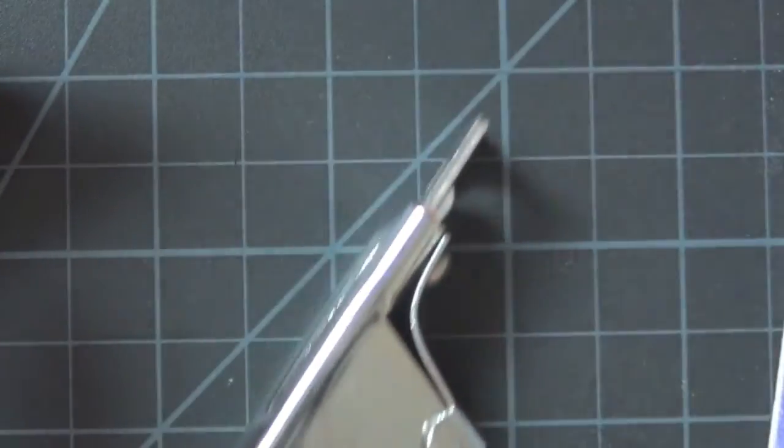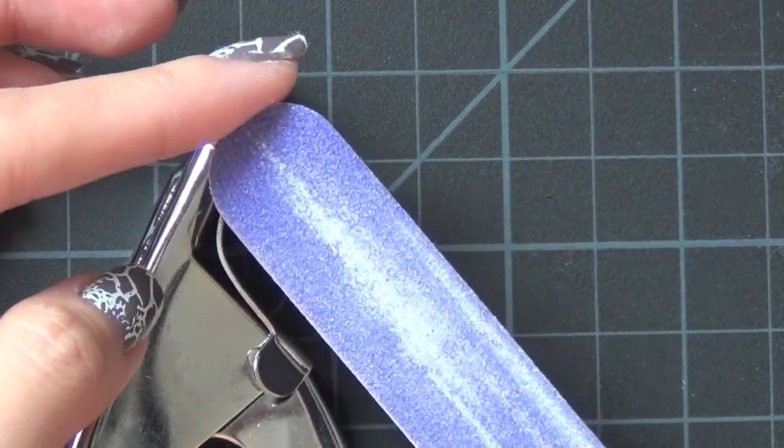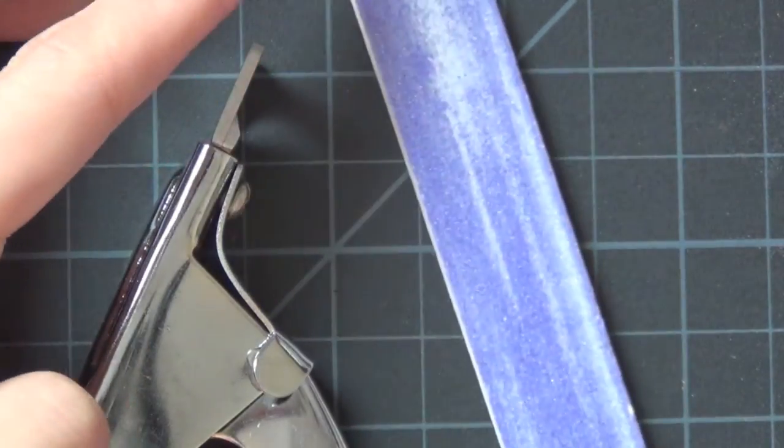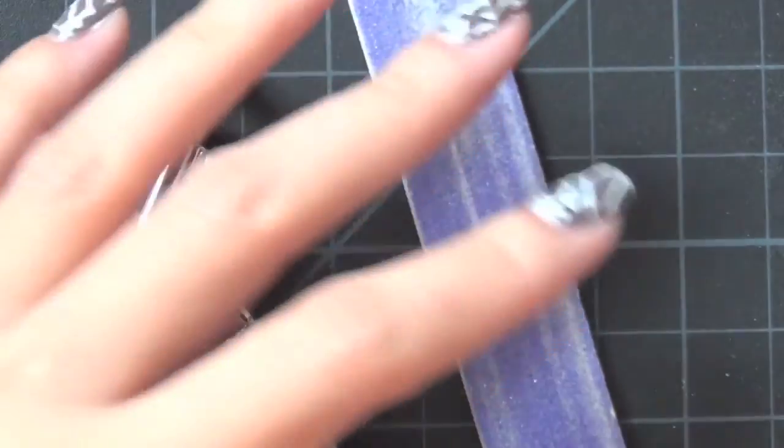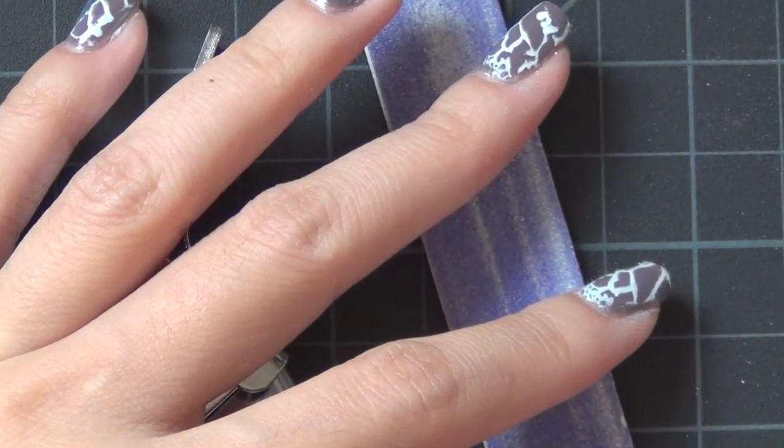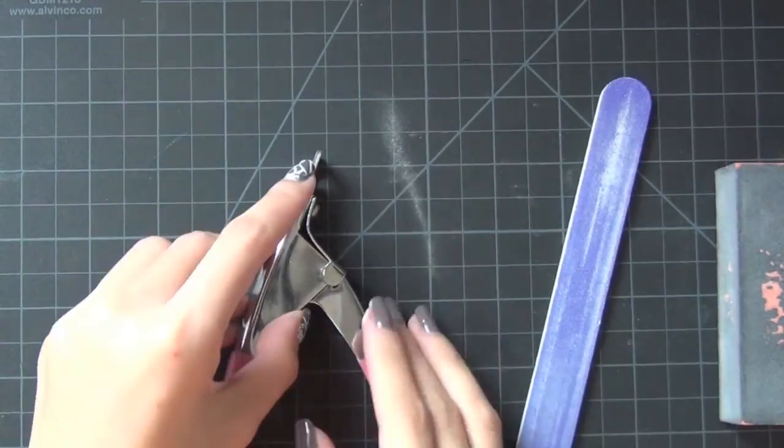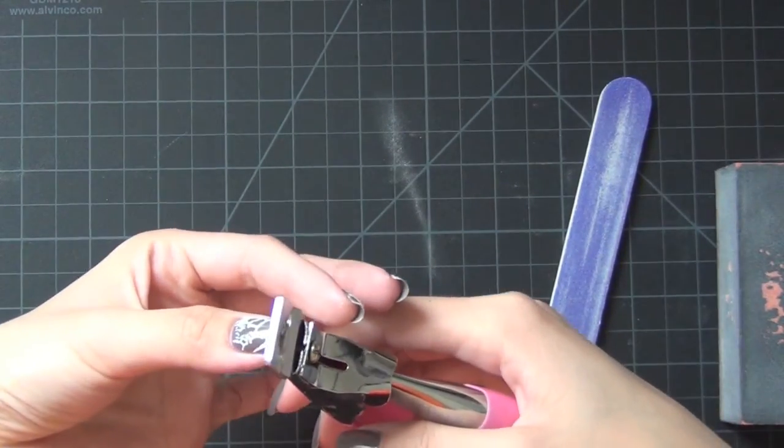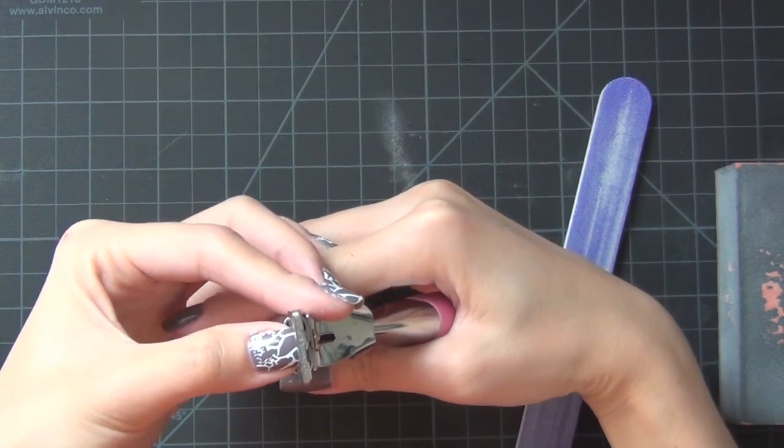I also use a paper nail filer, a softer one, not the grainy one, this is very soft, and some buffers. These are the things that you can find in the drug stores near you. Maybe not the clipper, but try to watch this video until the end and maybe you can win it.